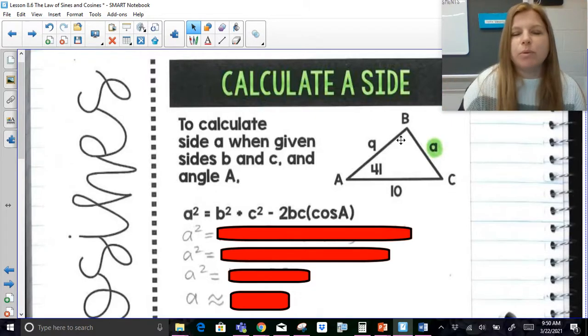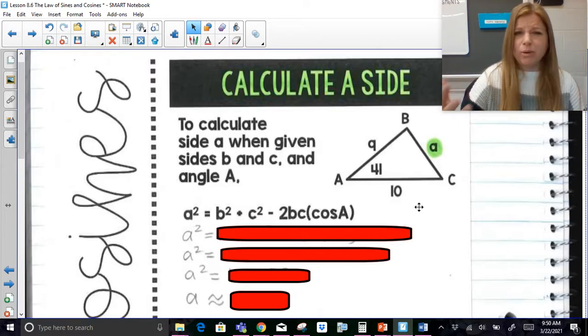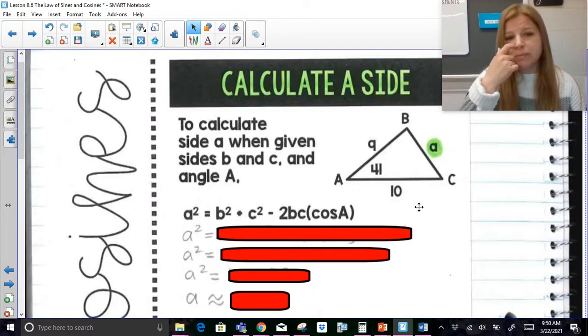So here's an example where we would need to calculate a missing side. So let's say I wanted you to find side A, and yes, side A is across from angle A, which is 41. But notice I wouldn't be able to use law of sines here, because I could say sine of 41 over A is equal to, and then the moment I want to set up a ratio with an opposite angle and side, I realize I don't have that. I wouldn't be able to use it. So law of cosines is what comes into play.